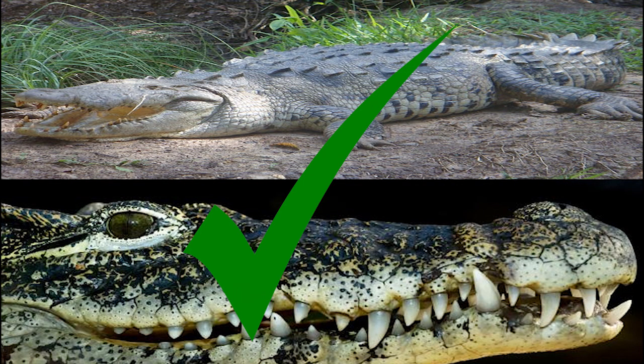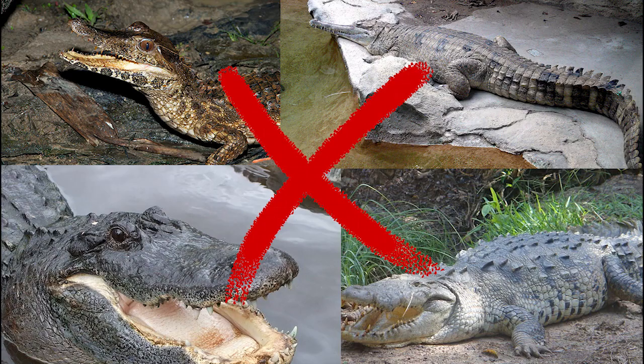A bit of trivia: while some species of crocodiles like the Cuban and American crocodile can interbreed with one another, it is impossible for crocodiles, alligators, gharials, and caiman to interbreed with each other.